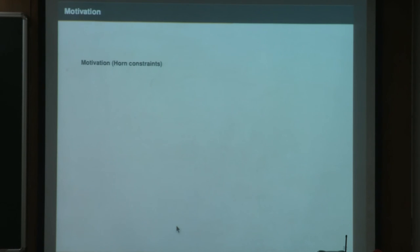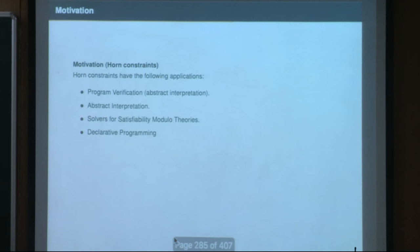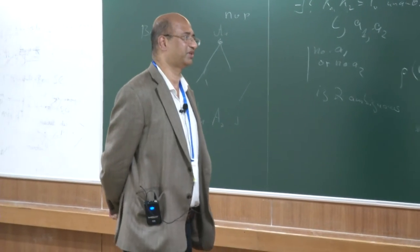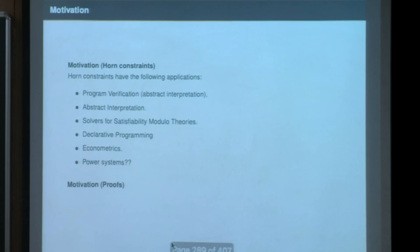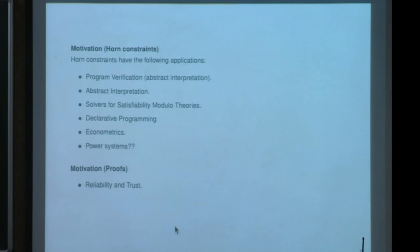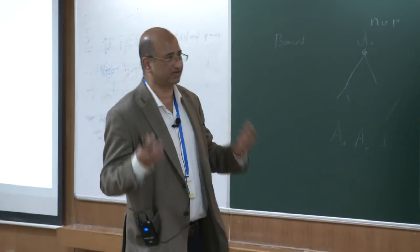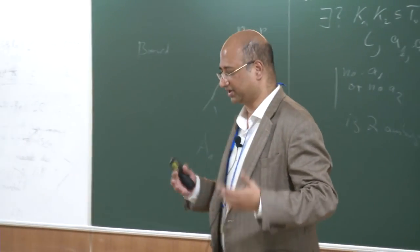Why study horn constraints? Applications include program verification for abstract interpretation, SMT solvers, declarative programming, econometrics, and power systems. Why study restricted proof systems? Because proofs act as negative certificates of infeasibility. If a system is satisfiable, you can provide a satisfying assignment to check; if it is unsatisfiable, you need a certificate—that is what these refutation proofs provide.